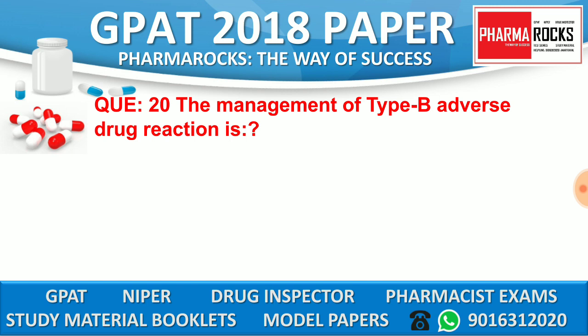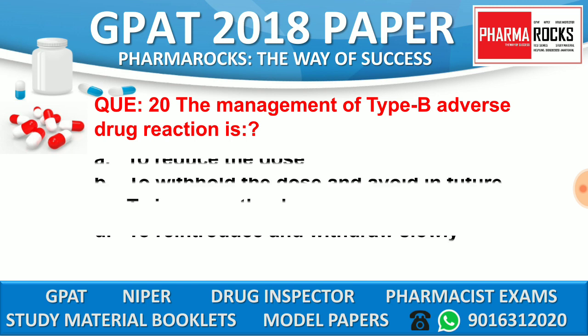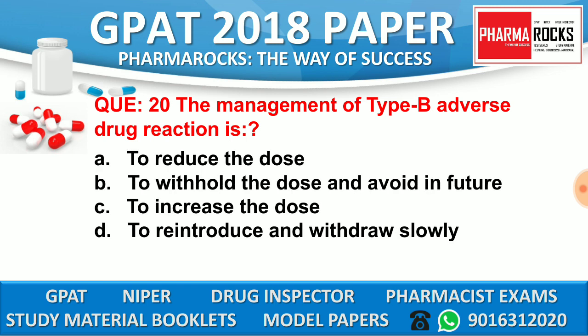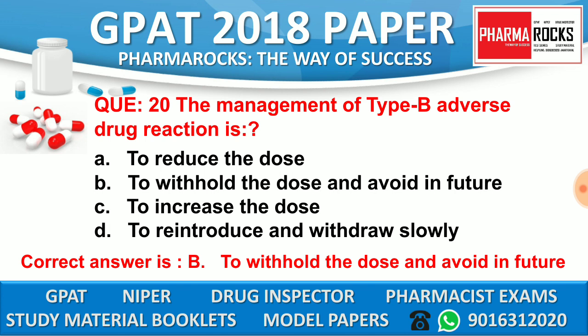Question number 20: The management of type B adverse drug reaction is. Option A: to reduce the dose. Option B: to withhold the dose and avoid in future. Option C: increase the dose. Option D: reintroduce and withdraw slowly. The correct answer is option B, to withhold the dose and avoid in future.